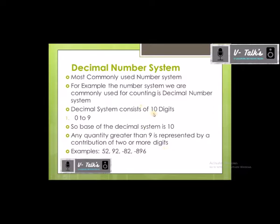The main things to remember: the decimal number system consists of 10 digits — 0, 1, 2, 3, 4, 5, 6, 7, 8, 9. That's 10 digits, which is why the base of the decimal number system is 10.